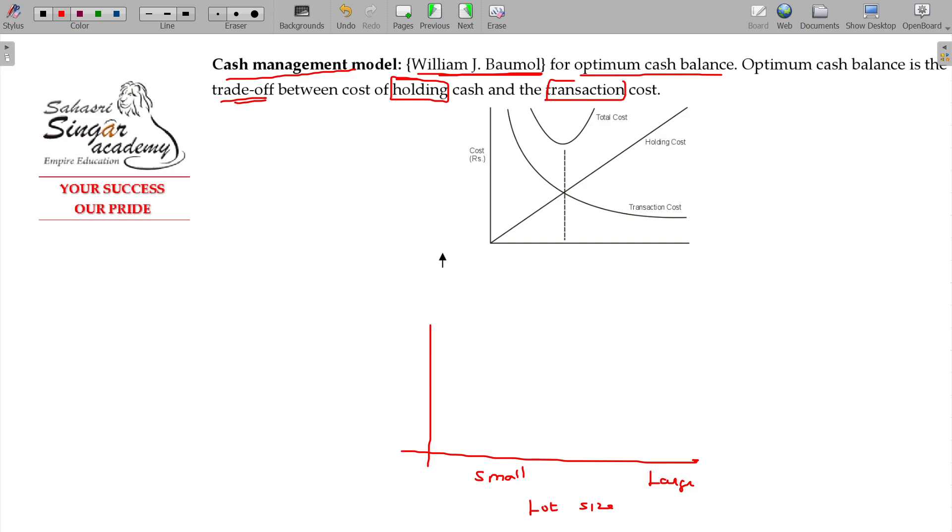Large lot size - transaction cost once or twice, so cheaper.